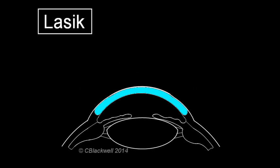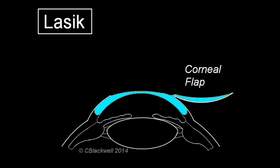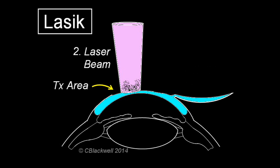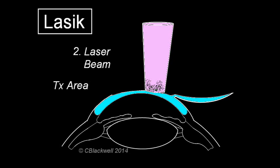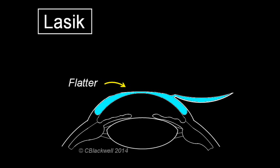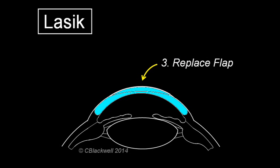LASIK is based on using an excimer laser to reshape the cornea. First, the surface of the eye is anesthetized. Then a flap is created by one of two methods — originally with a mechanical device like a carpenter's plane, and now with a laser that makes a very precise cut. Either way, the flap is hinged and folded to the side. The excimer laser is programmed to remove a specific thickness of corneal tissue, making a specific amount of correction — in this case flattening the cornea to reduce myopia. When that is done, the flap is replaced and allowed to settle in place.